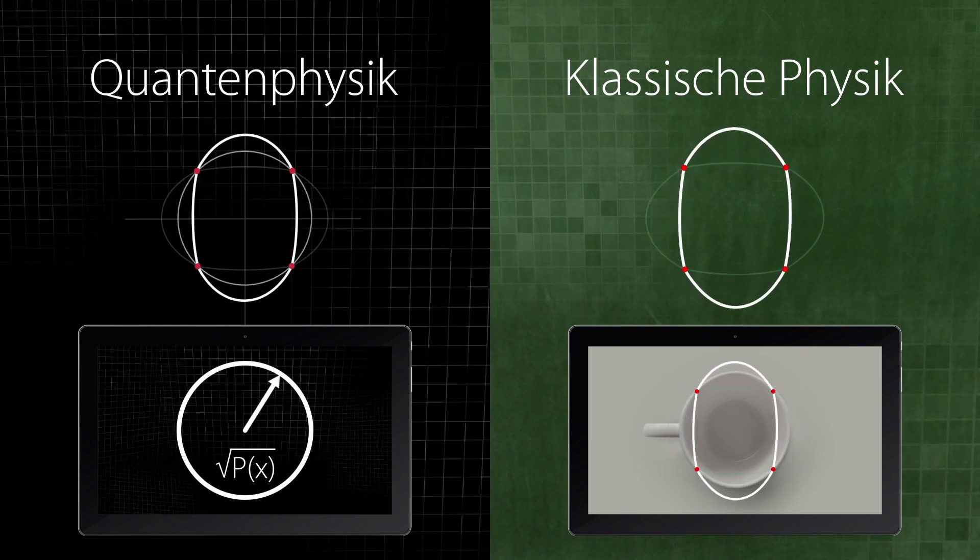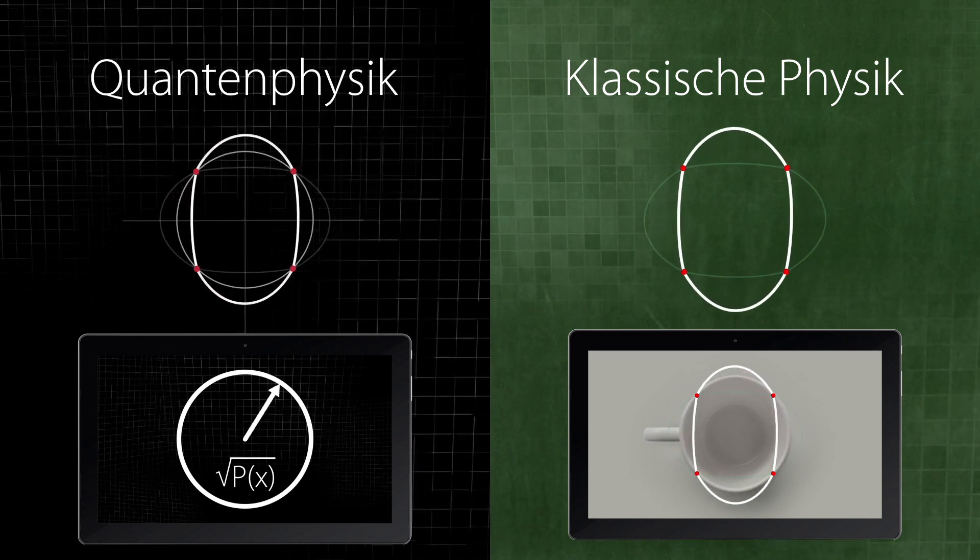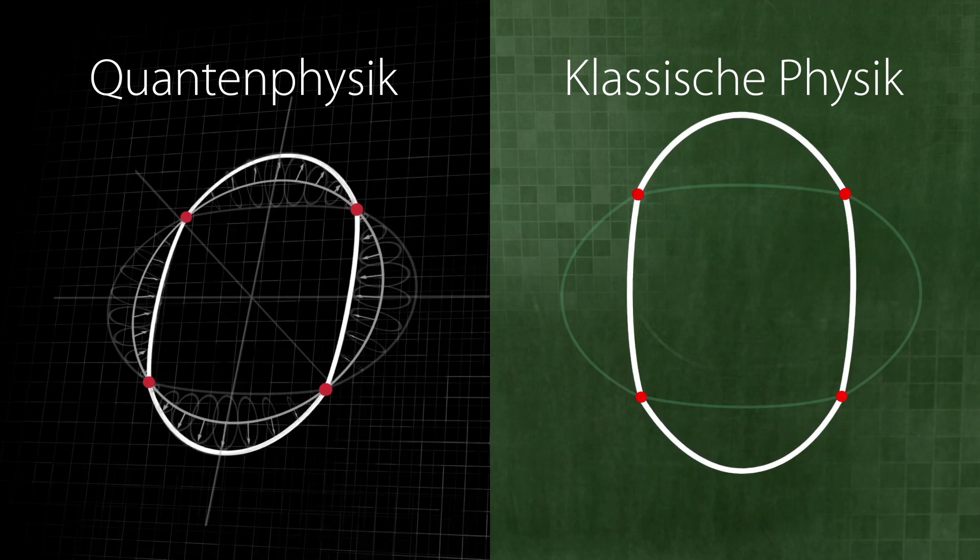When we cut the sphere in half, we obtain a vibration on a circular line. In the quantum dimension, however, the result is a section of a complex wave function.